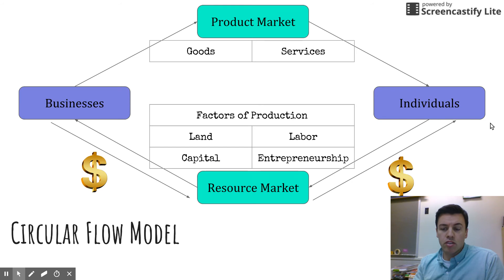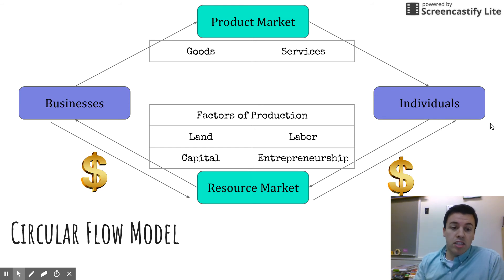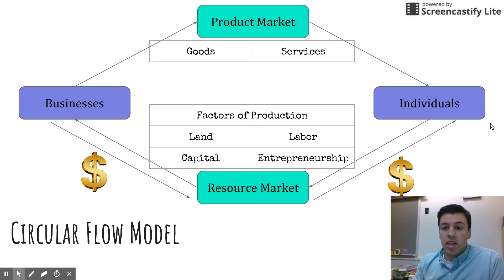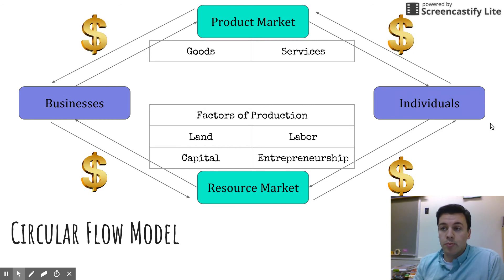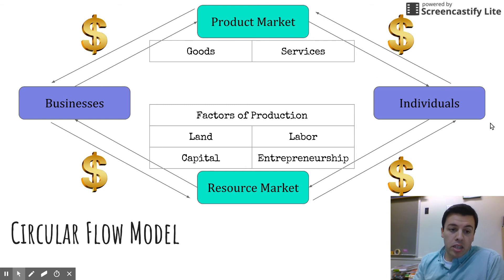This brings us to the product market, where businesses provide their goods and services to individuals. The goods and services flow through the product market, which is anywhere you can purchase a good or service. These businesses are not providing goods and services out of the kindness of their heart — they are profit-seeking — so individuals need to compensate them, meaning money flows back through.